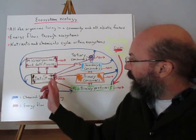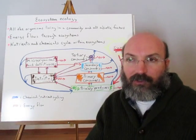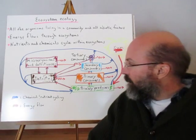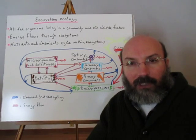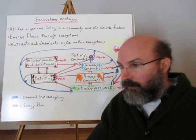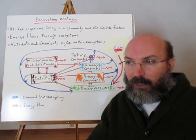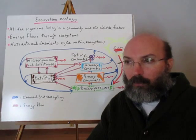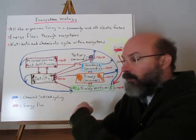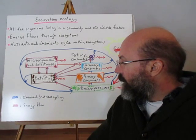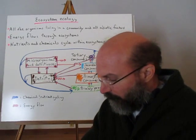The blue in the diagram represents the different chemicals and nutrients found in a system, and the blue actually cycles through an ecosystem. It can be exported — for example, bananas grown in tropical soil bring nutrients from Costa Rica or Ecuador to North America. But in general, we can say nutrients and chemicals cycle through systems, while energy flows through systems — energy does not cycle, it flows.